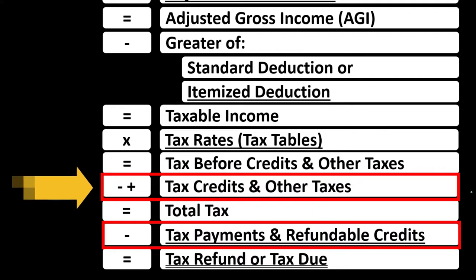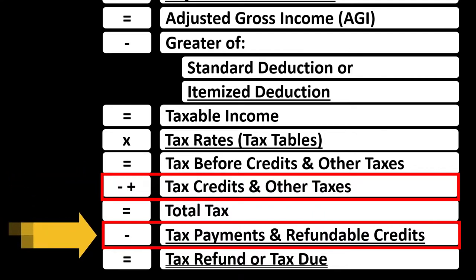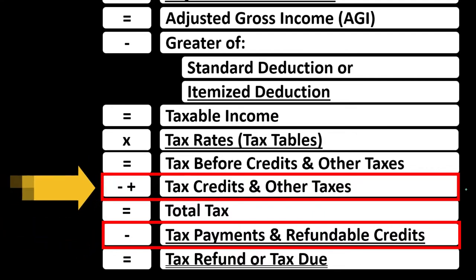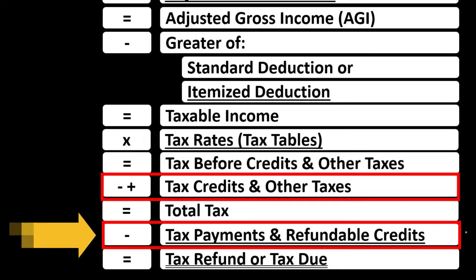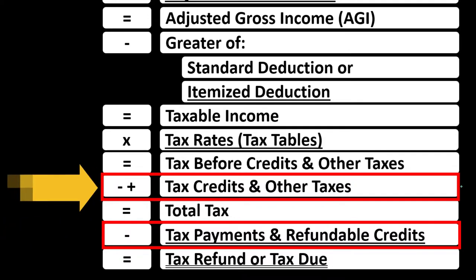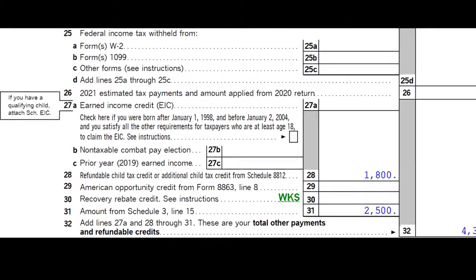We can break credits into two major categories: non-refundable and refundable. Non-refundable means the credit won't take the liability below zero. Refundable means it may. If it did, it would be more like a benefit program at that point, even though it's still called a refund. Some credits might have both a non-refundable and a refundable component.